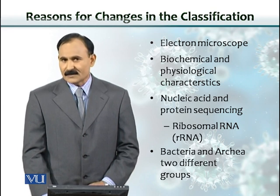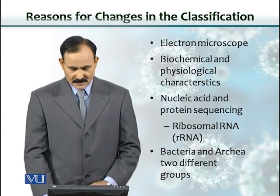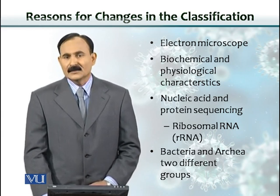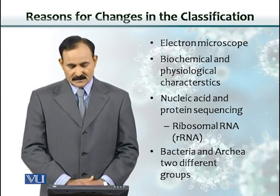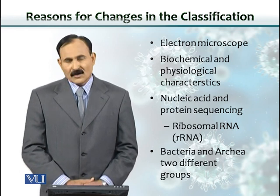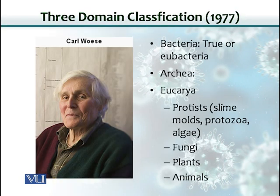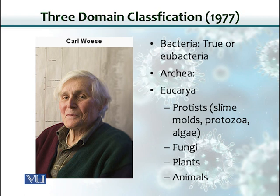Microbiologists and taxonomists came up with another scheme largely based on ribosomal RNA sequences. They found that bacteria and archaea belong to two different groups. So in 1977, Carl Woese, an American microbiologist, proposed that the word 'domain' should be introduced into classification. Now all organisms are put into three domains: Bacteria, Archaea, and Eukarya, which includes protists, fungi, plants, and animals.